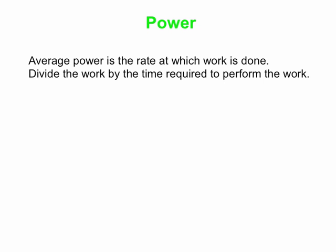So let's talk about power. There's quite a connection between power and energy. Your average power, or the average power in a certain situation, is simply the rate at which work is done — the average rate at which work is done. So all you've got to do is divide work by the time required to perform the work, and that is your power.